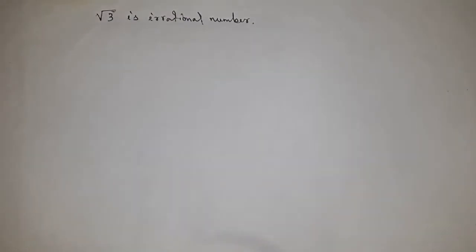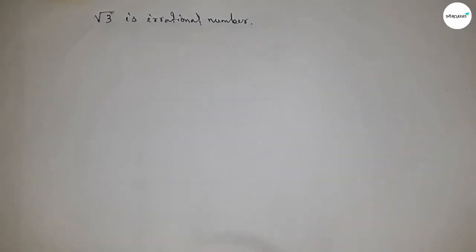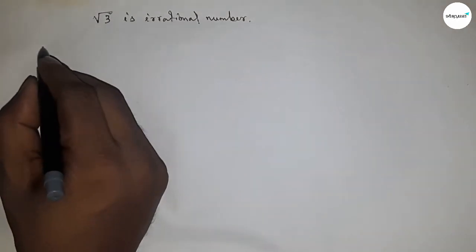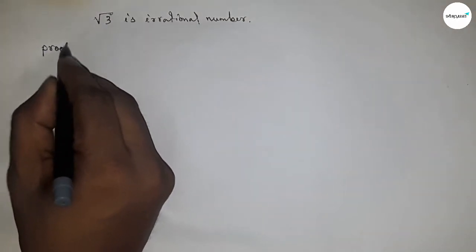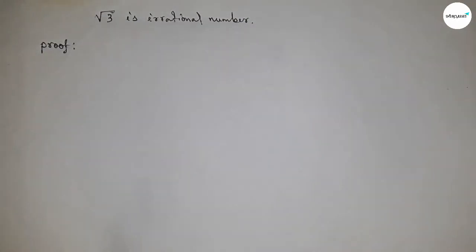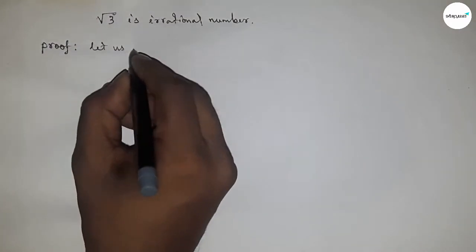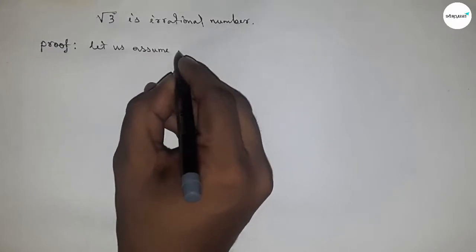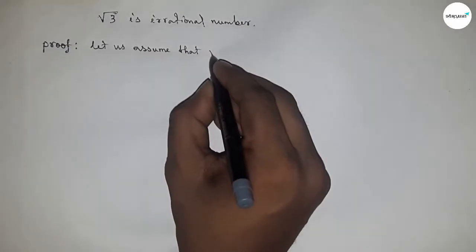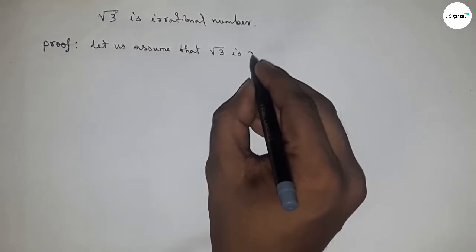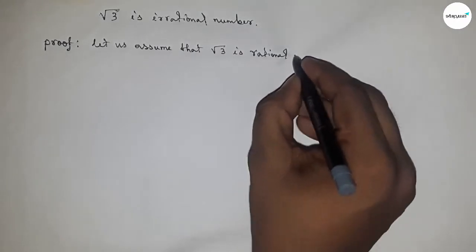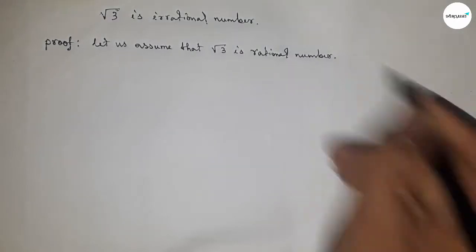Hi everyone, welcome to SSR classes. Today we have to prove that root 3 is an irrational number by using the contradiction method. So let's prove this. First of all, let us assume that root 3 is a rational number.